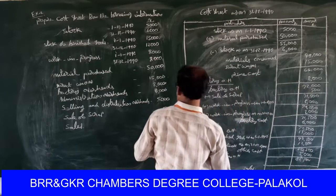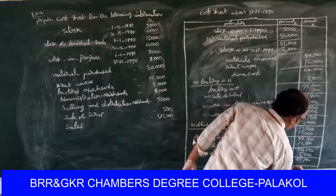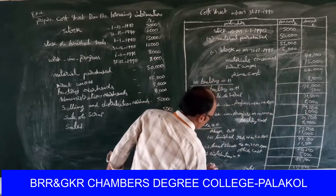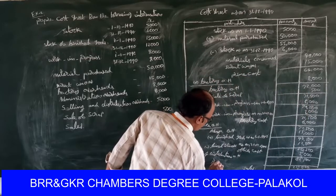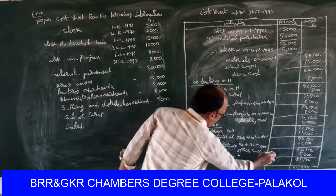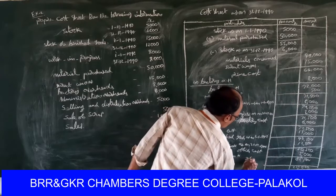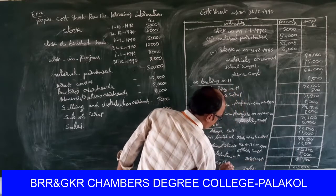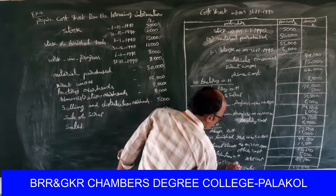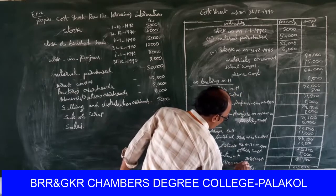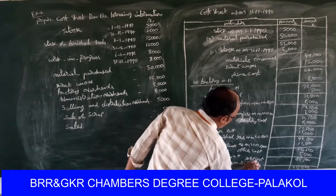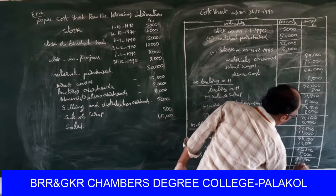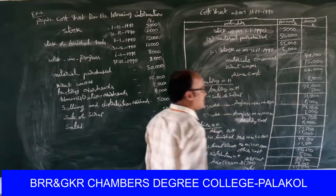Sales amount is one lakh fifteen thousand rupees. Total cost is eighty-five thousand five hundred. Sales price is more than total cost, so we find out the profit. One lakh fifteen thousand minus eighty-five thousand five hundred equals twenty-nine thousand five hundred rupees profit.